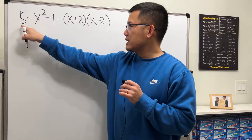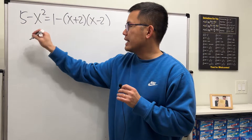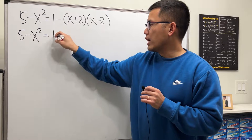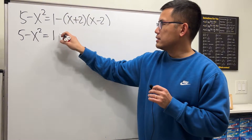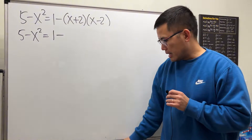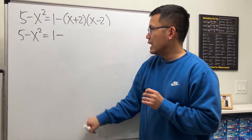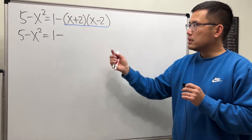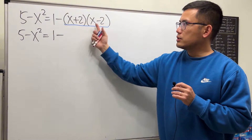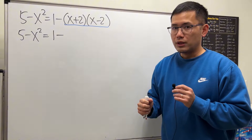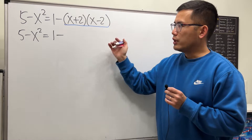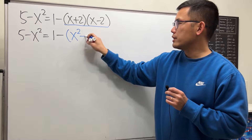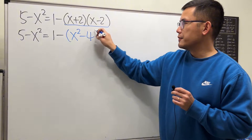Let's keep the left side: 5 minus x squared equals 1. We keep the minus, but we will have to multiply x plus 2 times x minus 2. Notice, this is just the difference of two squares formula, and it gives you x squared minus 4.